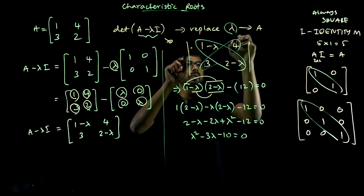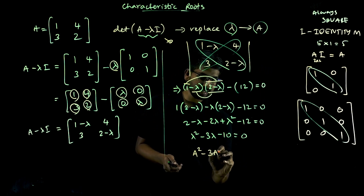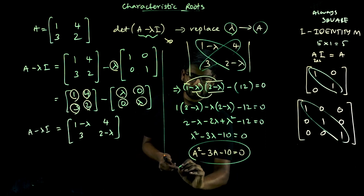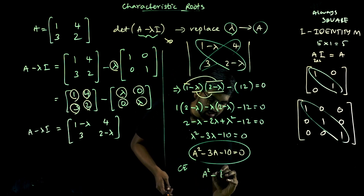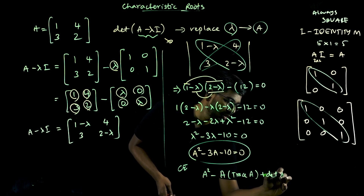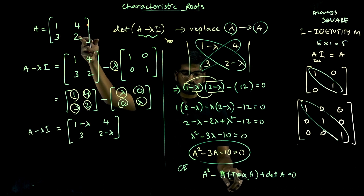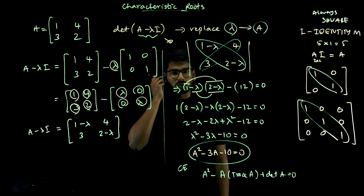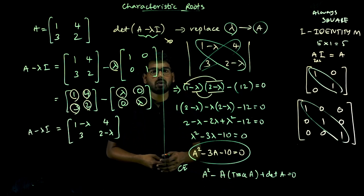Replace lambda by A: we get A squared minus 3A minus 10 equals zero. This is the same characteristic equation obtained from the shortcut formula: A squared minus A times trace of A plus determinant of A. Trace of A is 1 plus 2 equals 3. Determinant of A is 2 minus 4 times 3 equals 2 minus 12 equals minus 10.